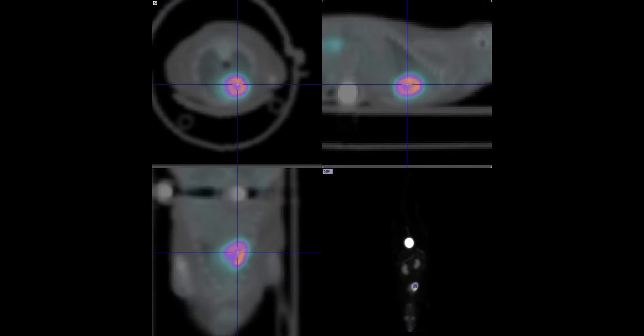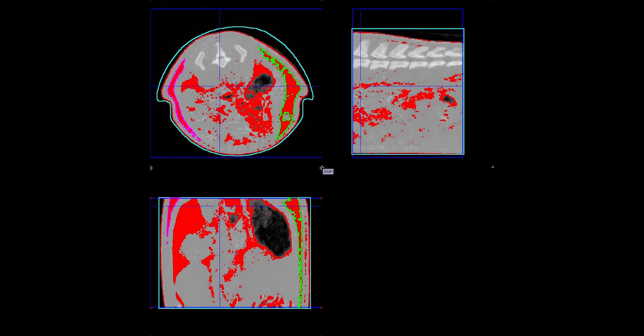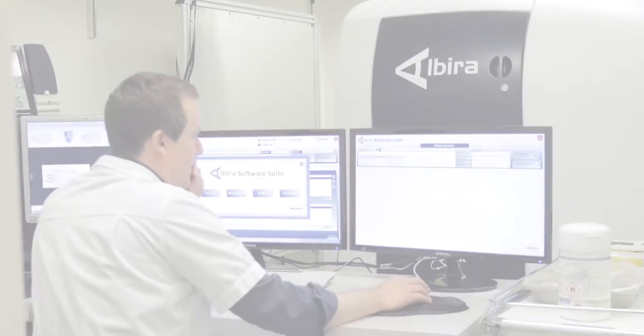CT is basically a morphological modality that allows you to see the shape of the organs and eventually where the localization of the abnormality that we use in SPECT and PET can be localized. So it's an anatomical modality.